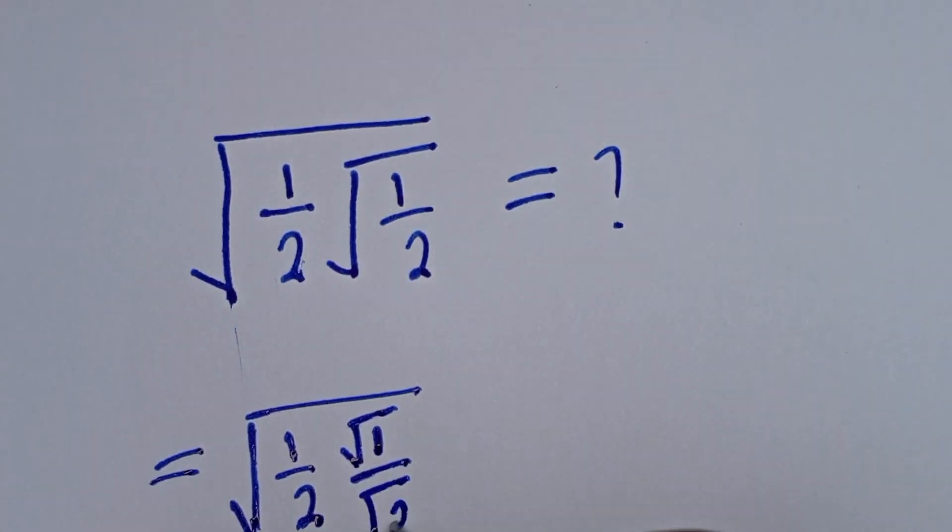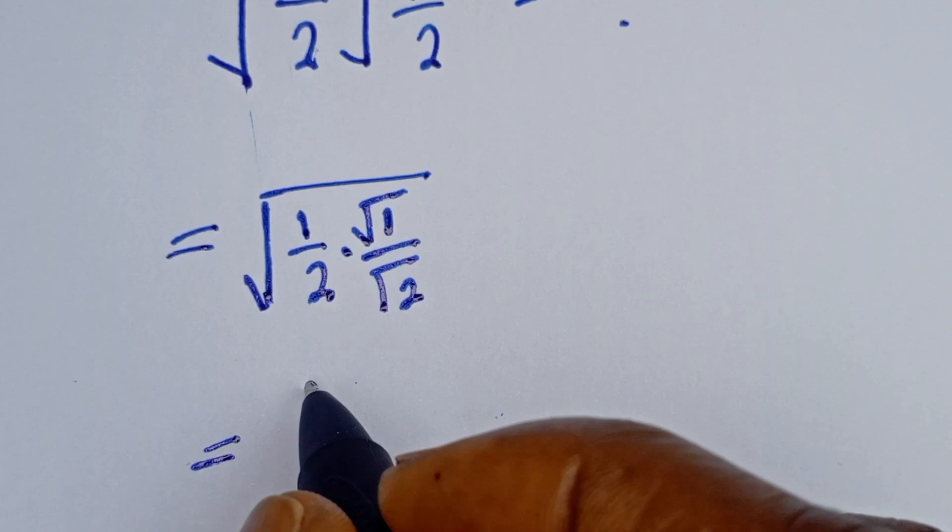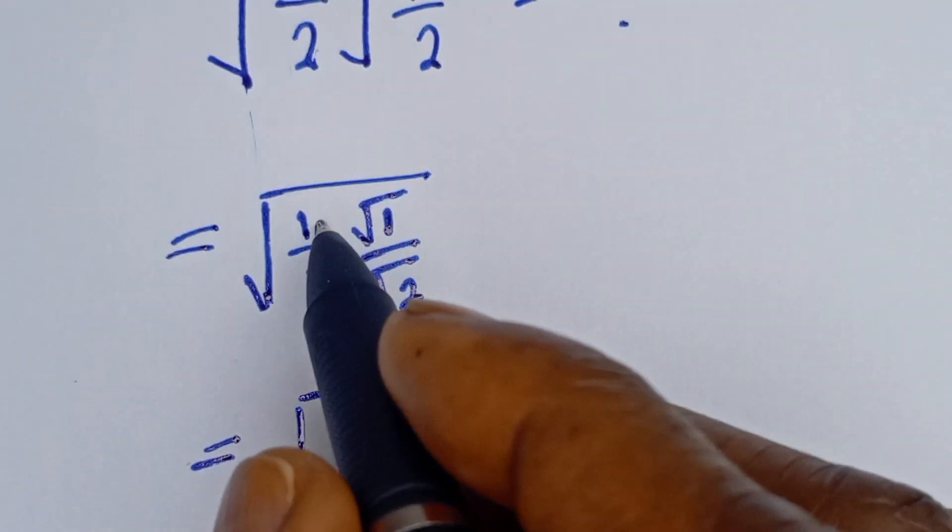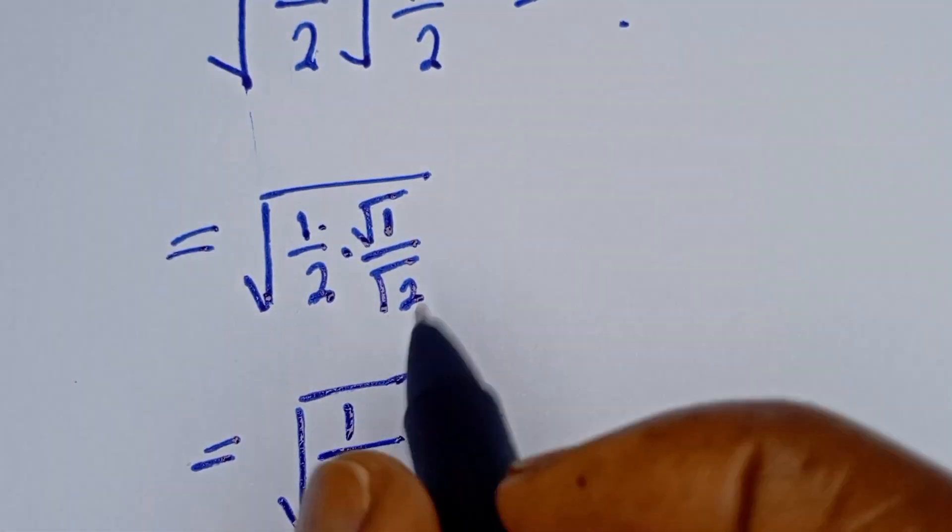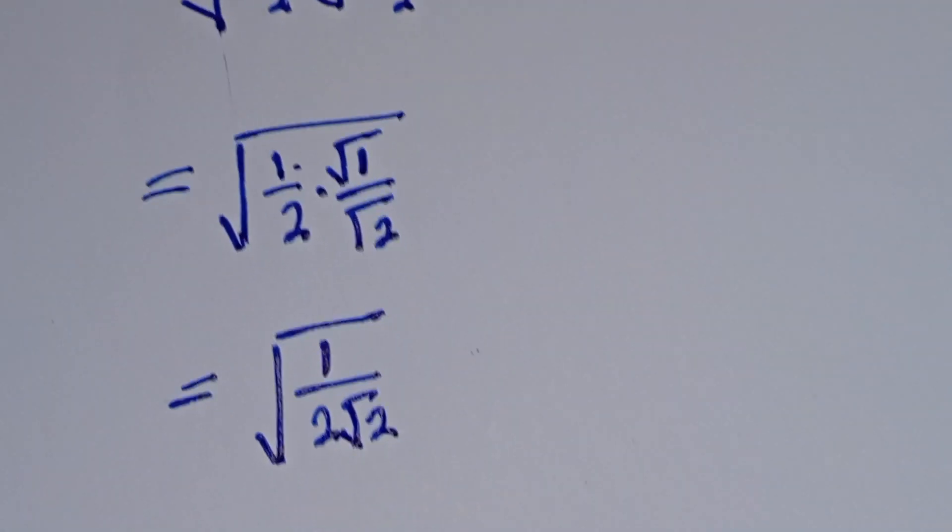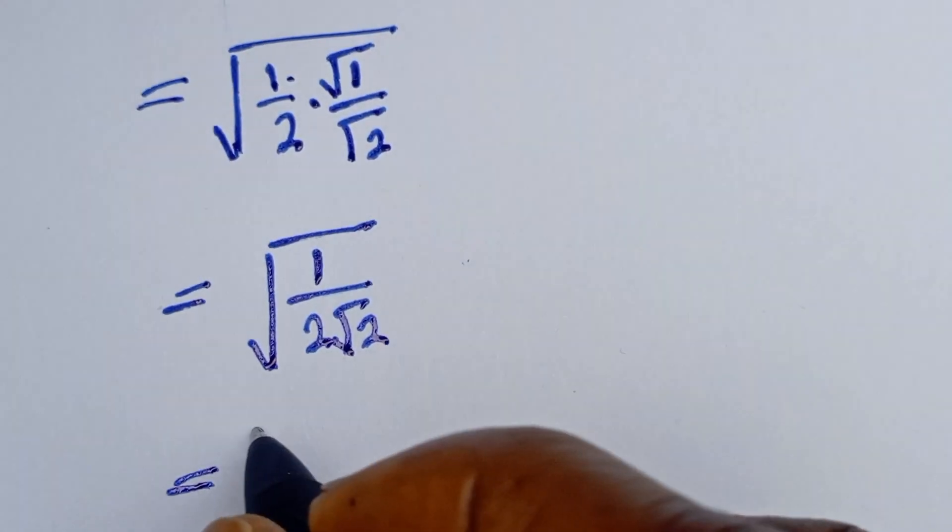by the square root of 2. And this is equal to the square root of 1 times the square root of 1, that is 1, divided by 2 times the square root of 2, that is 2 square root 2. And this is equal to... we can rationalize this. We have the square root of